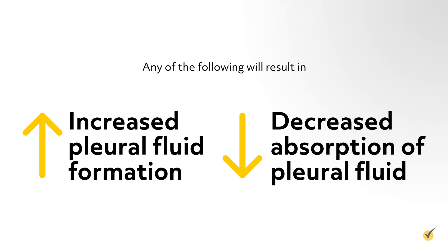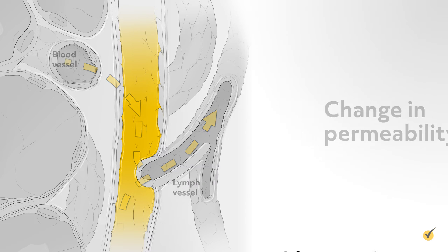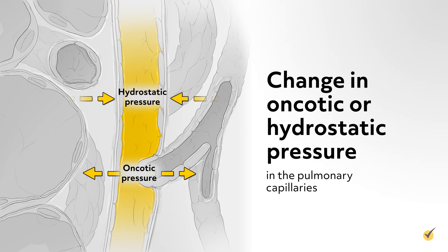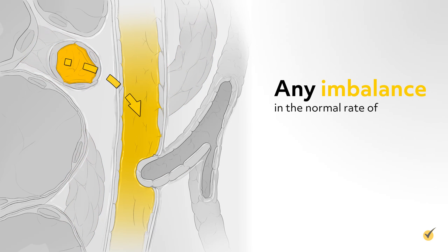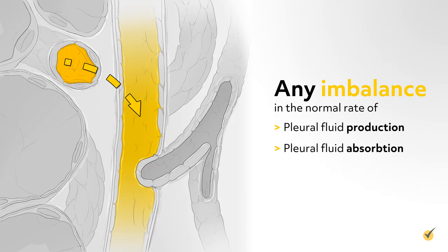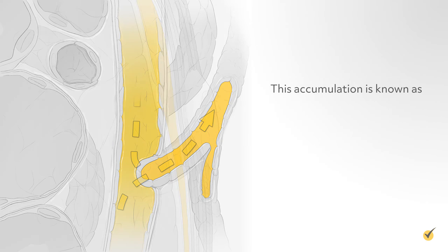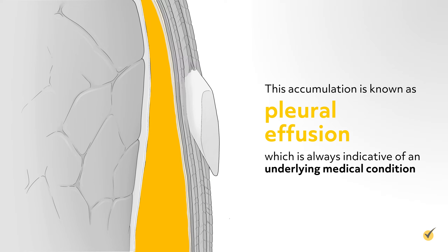Any of the following will result in increased pleural fluid formation or decreased absorption of pleural fluid: an obstruction in the flow of either the blood vessels or lymphatic system, a change in the permeability of pleural membranes, a change in either the oncotic or hydrostatic pressure in the pulmonary capillaries, and vascular inflammation. Any imbalance to the normal rate of pleural fluid production or absorption, or both, will cause fluid to accumulate in the pleural space. This accumulation is known as pleural effusion, which is always indicative of an underlying medical condition.